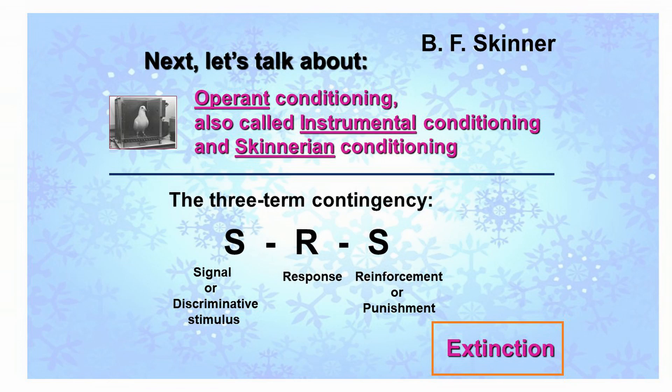If in some situation we behave a certain way and the outcome is something we like, then we're apt to do it again in that situation. If the outcome of that response is not something we like, then we are less apt to do it in the future. Operant conditioning involves the three-term contingency, SRS, where S is a stimulus and R is a response. In the presence of some signal, properly called a discriminative stimulus, a response occurs and it may be followed by either reinforcement or punishment, which will affect the likelihood of that response in the presence of that discriminative stimulus in the future.